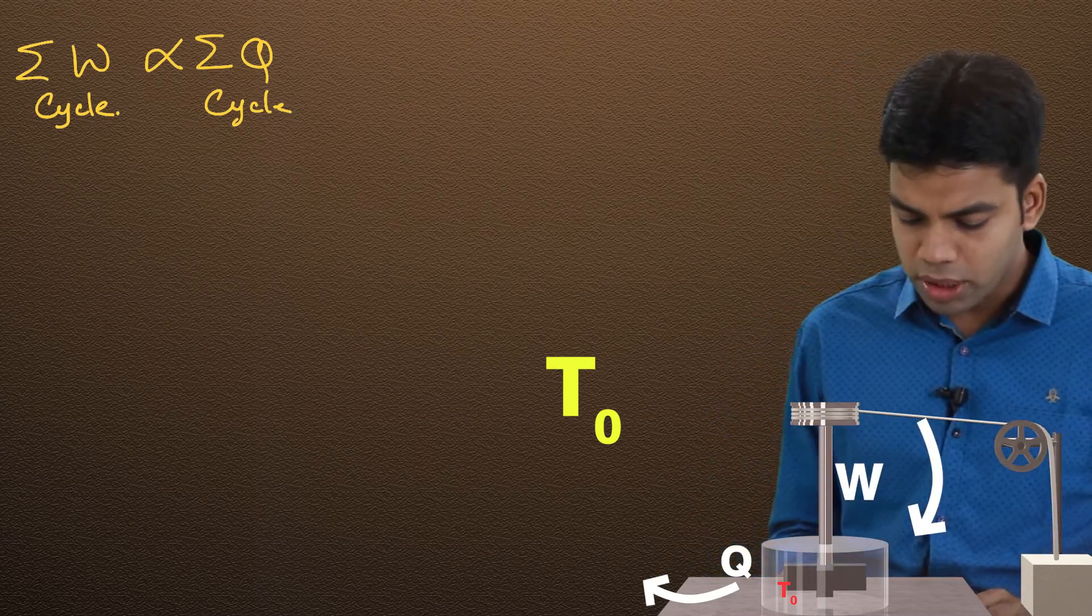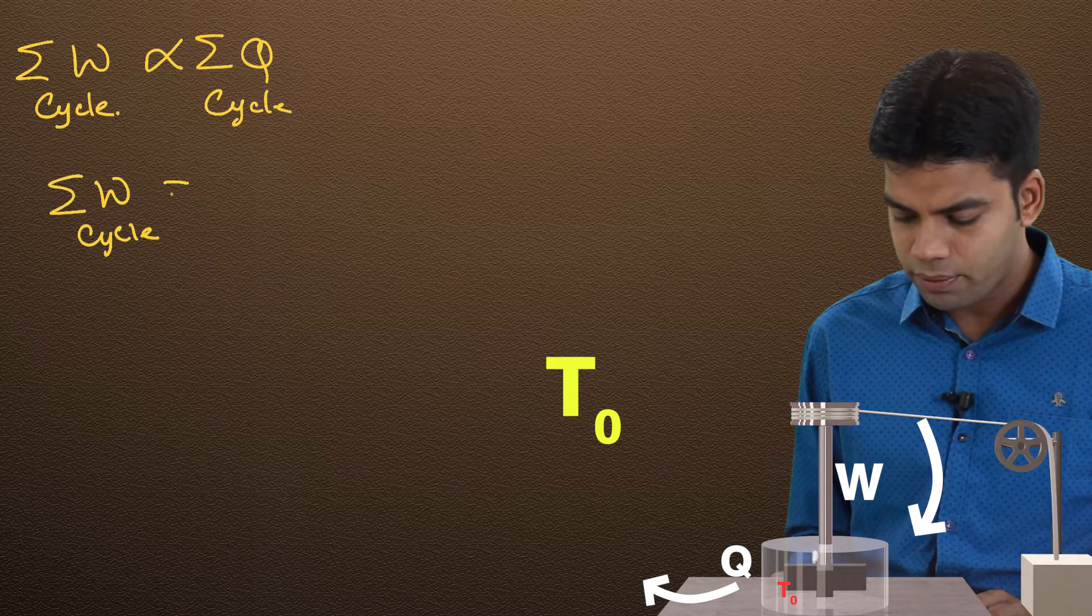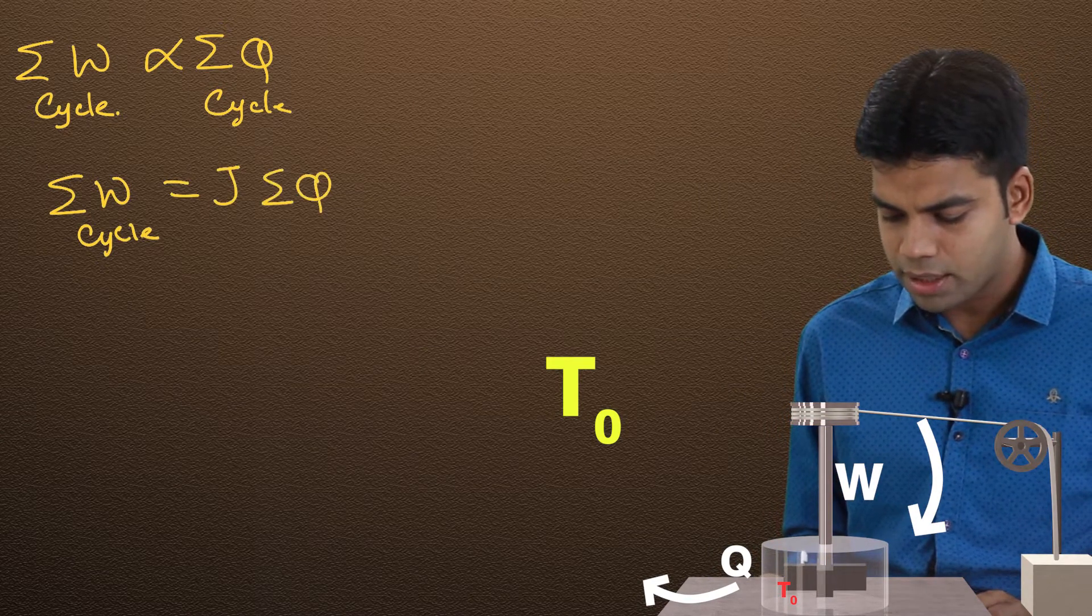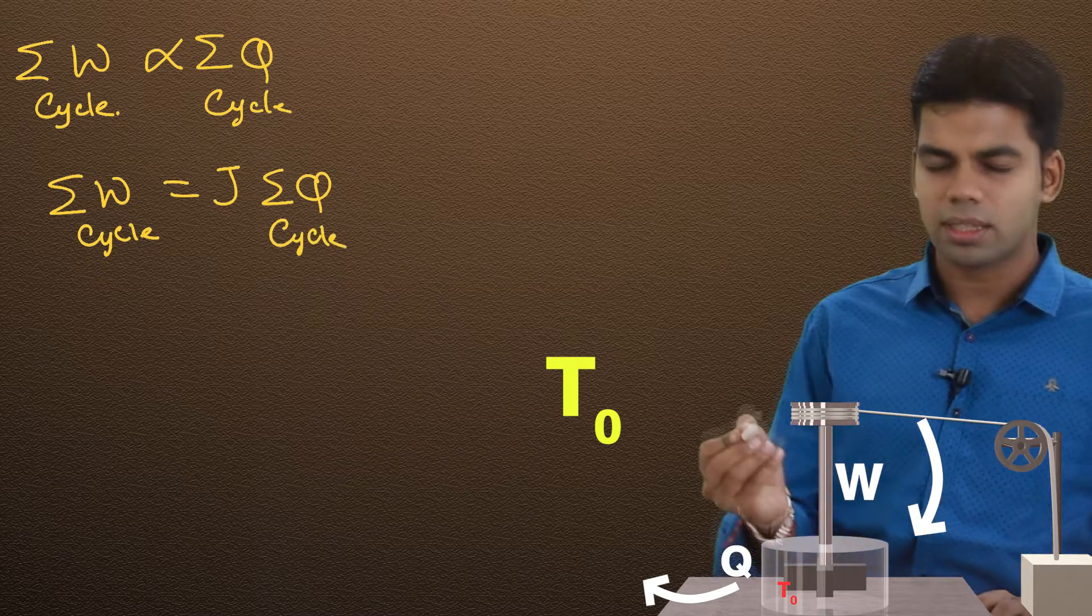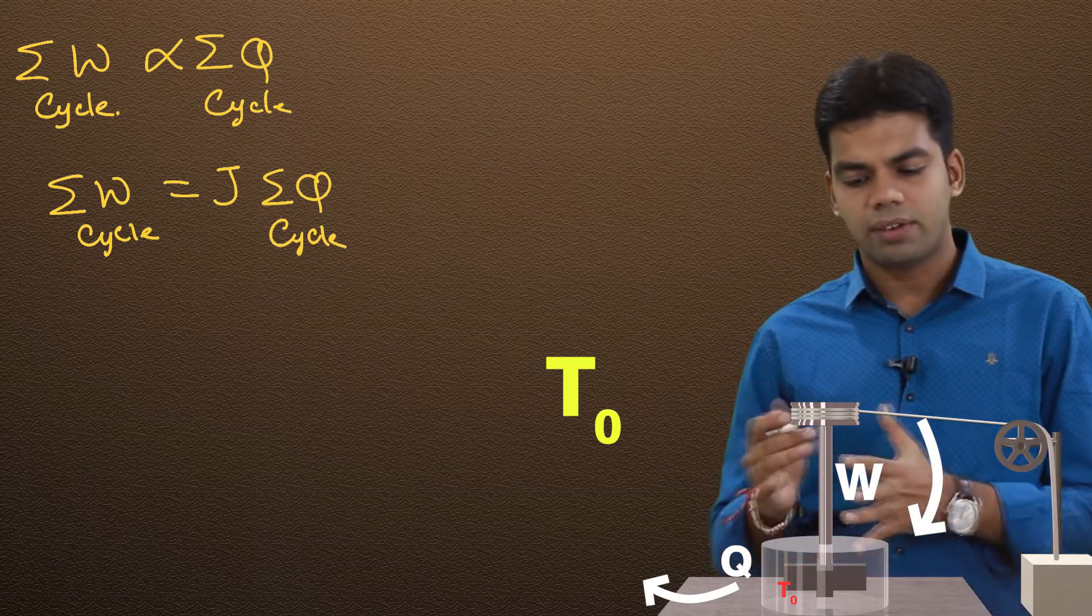Now in order to remove this proportionality, he used a constant J what he named as Joule's constant, as his name was Joule. So he gave one constant J.